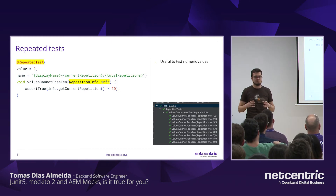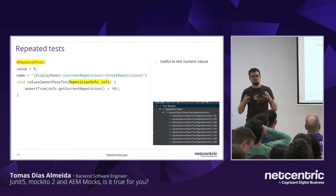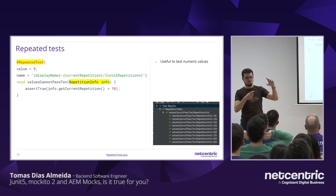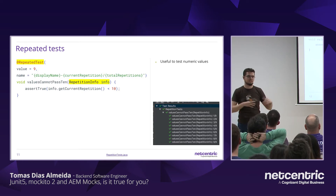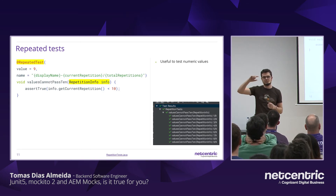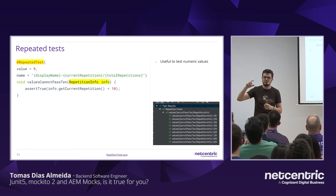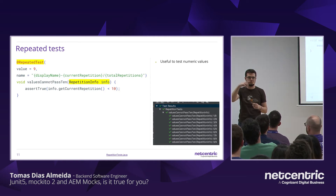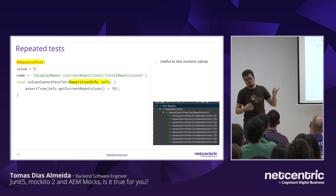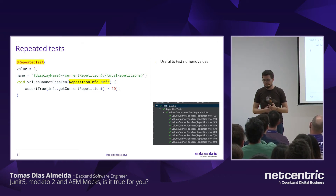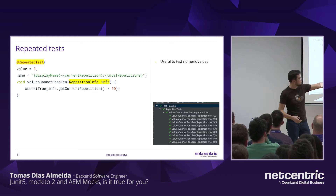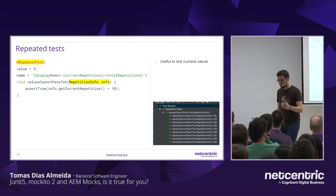In a project like BBVA, I had a lot of modules — each module is a component with five, six, or eight other components inside. If you want to test each component, you'd need to repeat the test or create a loop. With @RepeatedTest, you don't need to do that. And you also get the display name to show a beautiful name in IntelliJ or Eclipse.